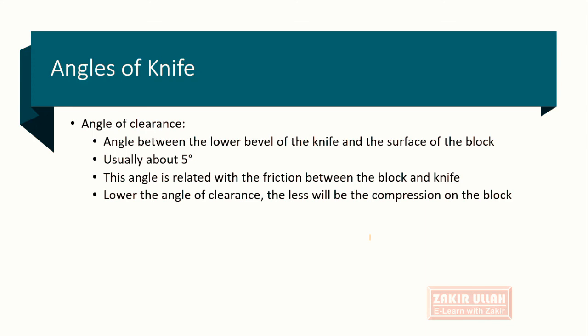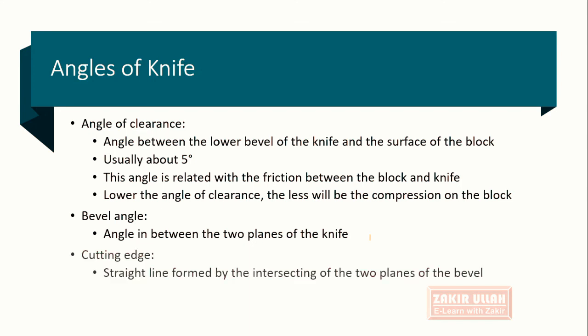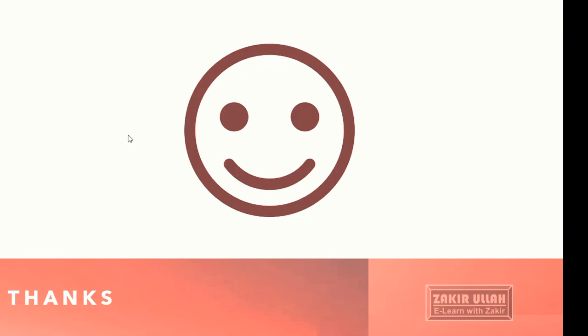The lower the clearance angle, the less compression on the block, making it easier to cut thin sections. The bevel angle is the angle between the two planes of the knife. The cutting angle is formed when a straight line is created by intersecting the two planes of the bevel.